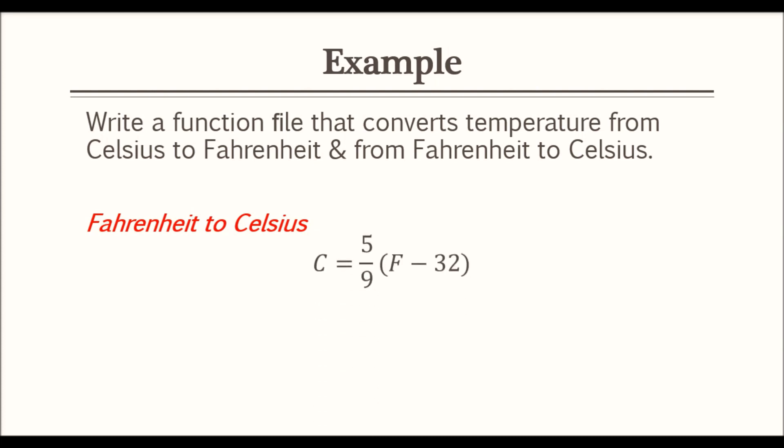Before the tutorial, I will share the formulas with you. For Fahrenheit to Celsius: C = (5/9) * (F - 32). For Celsius to Fahrenheit: F = C * (9/5) + 32. You will find different formulas online but make sure to use the accurate ones. Now let's move on to the tutorial.